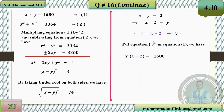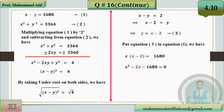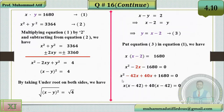Put the value y = x − 2 into equation one. Replacing y gives x(x − 2) = 1680. Expanding: x² − 2x − 1680 = 0. Now factorize using factors −42 and 40: (x − 42)(x + 40) = 0.